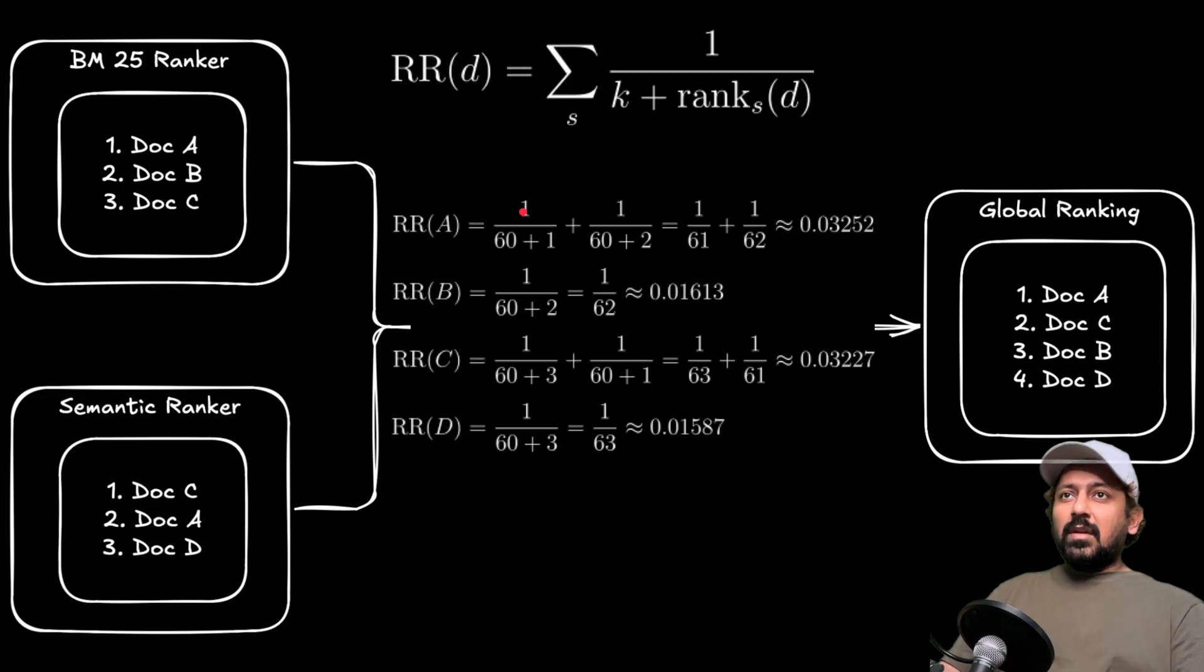And A also exists in the second one, so here it becomes 1 by 60 plus 2 because its rank is 2 in the second ranker. Similarly, for B, B exists only in the first one, so that's all we use - 1 divided by 60 plus 2. So you get a number here.